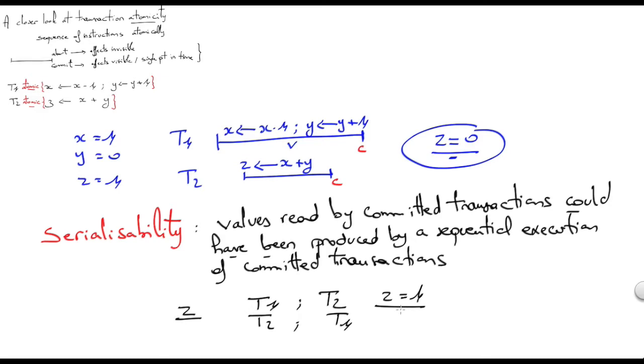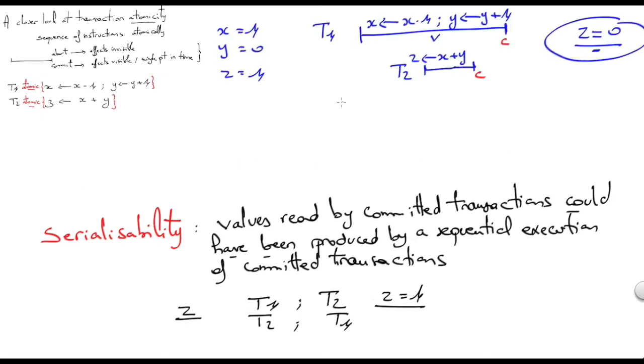Let's assume we have another transaction now, T3, that does the following. Increments x. And notice that T3 terminates before T2 starts. If this transaction T3 commits, then serializability says again that z should be a value that could have been produced by a sequential execution of committed transactions.